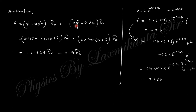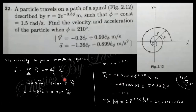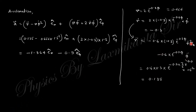The acceleration in plane polar coordinates is: a = (r-double-dot − r*phi-dot²)*e_r + (r*phi-double-dot + 2*r-dot*phi-dot)*e_phi. Since phi-dot is constant, phi-double-dot = 0. We calculate r-double-dot as the derivative of r-dot. Substituting r, r-dot, r-double-dot, phi-dot, and phi-double-dot = 0 into the expression gives the final acceleration values.